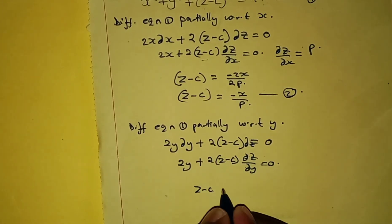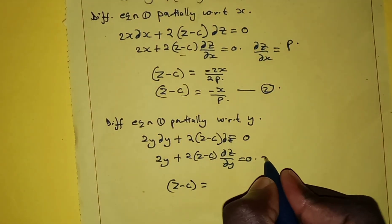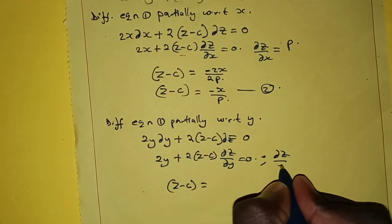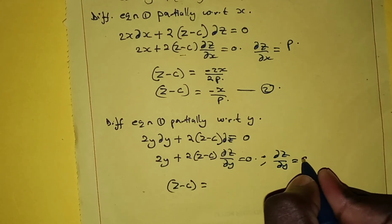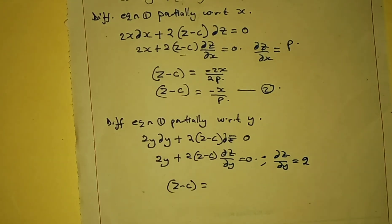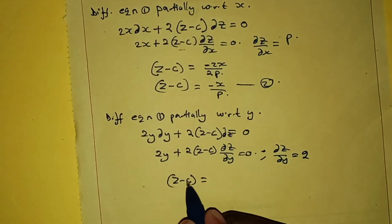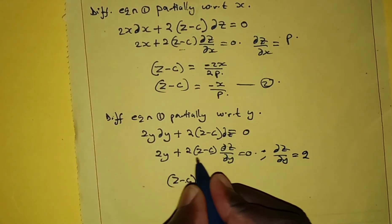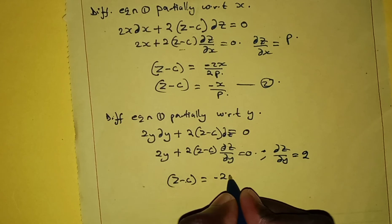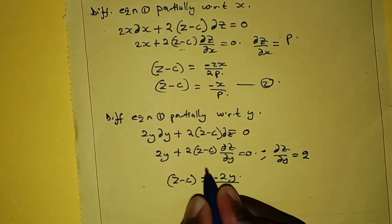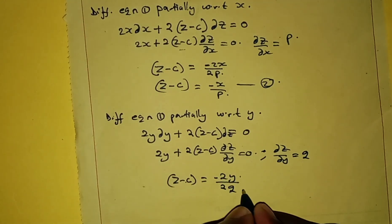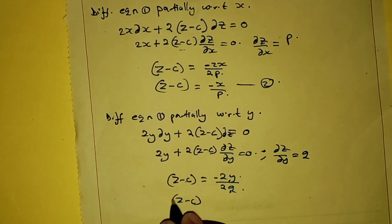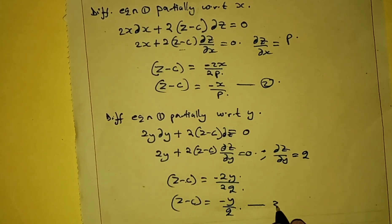So z minus c equals negative y over q. Partial z over partial y is equal to q. We call this equation 3.